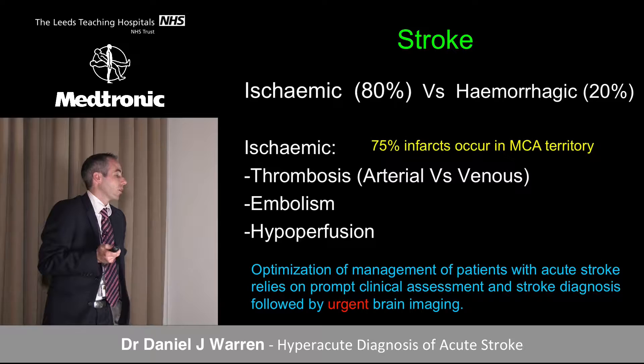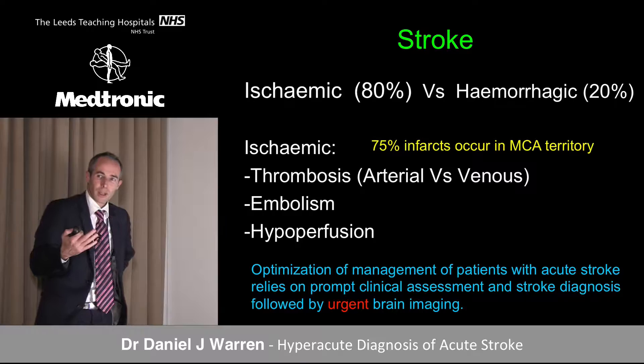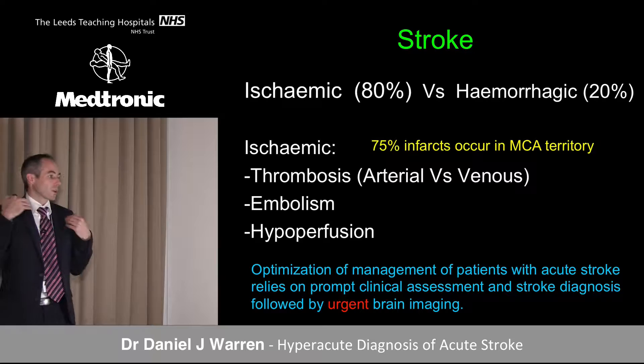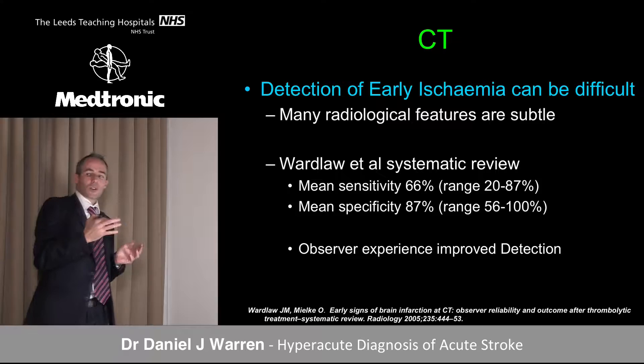80% of stroke relates to ischemic injury, and of those, 75% occur in the middle cerebral artery territory. Ischemia could be arterial or venous, it could be embolic, or it could be a hypoperfusion phenomenon. The key role of imaging is to make early diagnosis so that we can get prompt appropriate treatment.